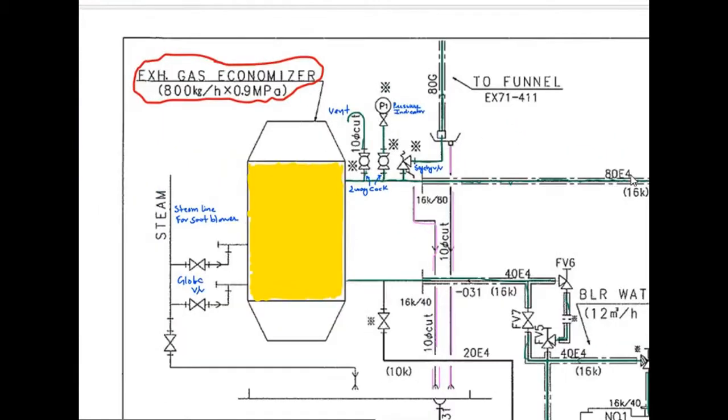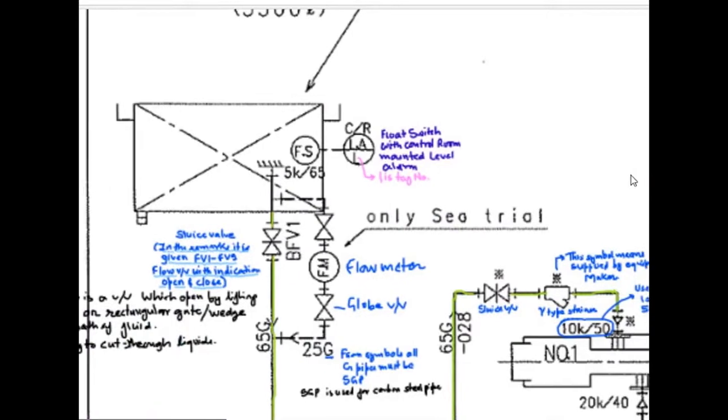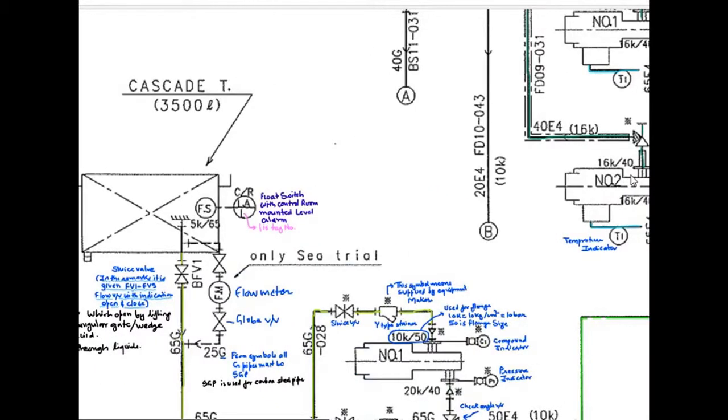At first, we start with Cascade Tank. Here you can see the Cascade Tank is given. Cascade Tank capacity is 3500 liters. Here you can see FS. FS means Floor Switch. And this circle and line in between indicates control room mounted level alarm. So it becomes Floor Switch with control room mounted level alarm. CR is given for control room. One is given below this line. It means it's a tag number.